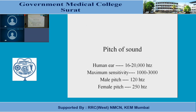The pitch of sound that a normal person can hear is from 16 to 20,000 hertz. Maximum sensitivity of the human ear is for about 1,000 to 10,000 hertz. Male pitch is 120 hertz and female pitch is 250 hertz. That's why the female sound is very sharp because the frequency is 250 hertz, as compared to male where the frequency of sound is 120 hertz.